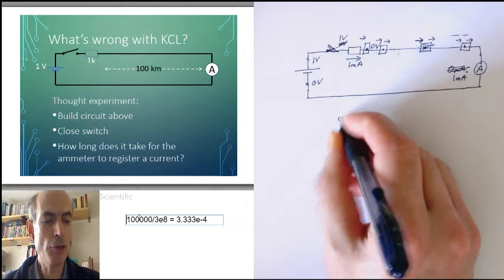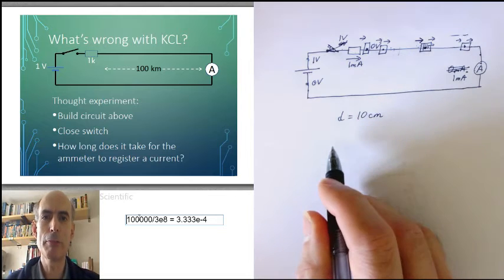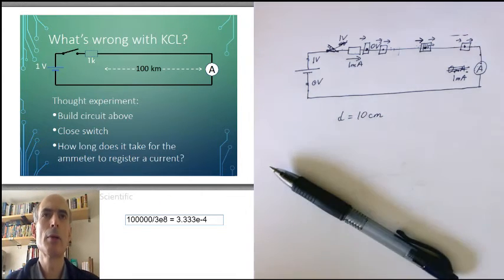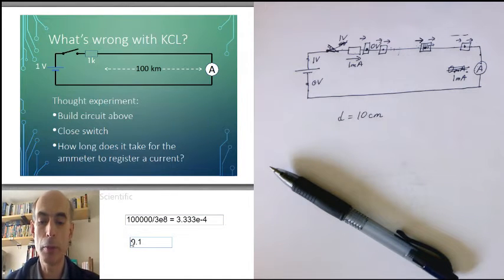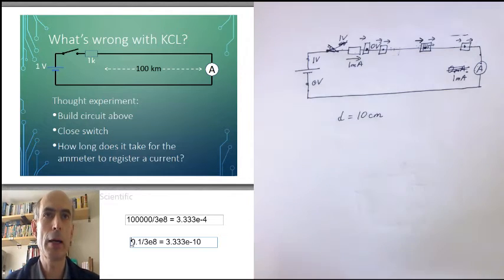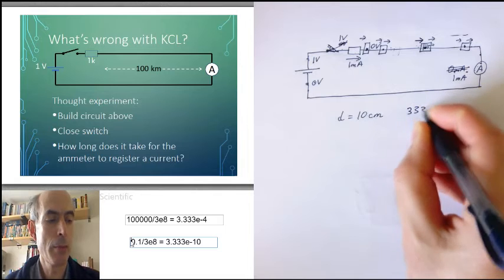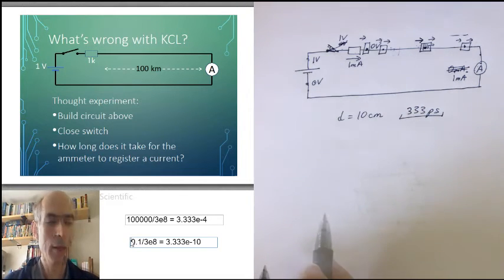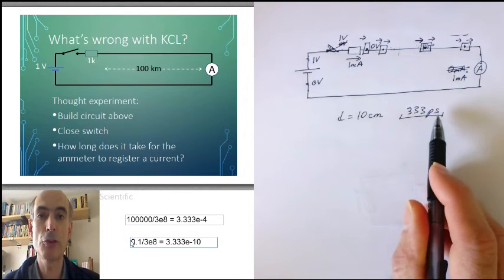So if the distance is 10 centimeters, how long does it take information to get from one end of the circuit to the other? Well, that would just be 0.1 meters divided by the speed of light or about 333 picoseconds. That's 333 times 10 to the minus 12 seconds.